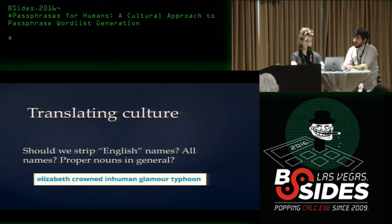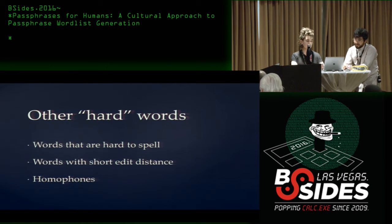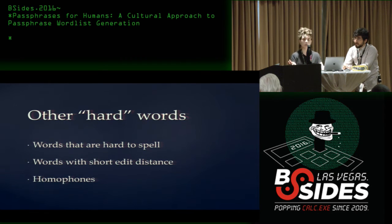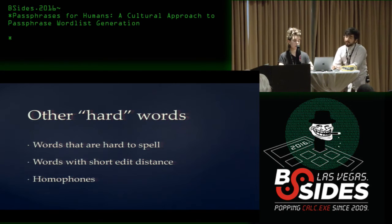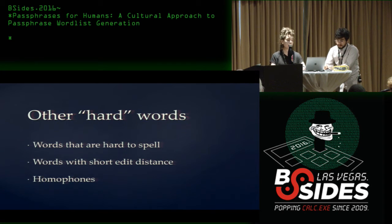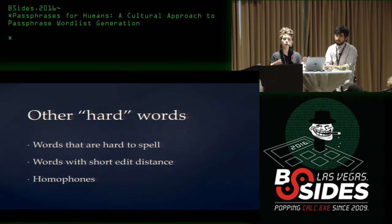Other things we haven't quite dealt with: words that are hard to spell. Occasionally we manually notice something like 'definitely' — which is a common word but people misspell it all the time, so we might just remove it. There are also words with short edit distances, homophones — we don't have a systematic way of dealing with these, particularly not across languages. We're a multilingual team based out of Montreal — everything is in English and French, and we have native Spanish, Russian, and Turkish speakers — but we're branching into languages where we don't have someone to catch obvious flags.